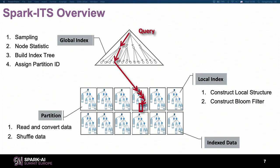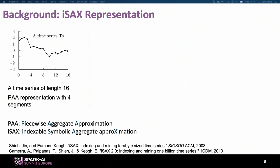After building the global index, the next step is to shuffle all records and put each time series into the proper partition. Then we construct a local index within each partition. Global index construction involves four steps, local index involves two steps, and the shuffle also involves two steps. Once a query comes, it first traverses the global index — which is small enough to stay in memory on the master node — to find the partition. The worker then loads that partition and traces the local index to find the target node. We also propose an enhanced method to improve accuracy.